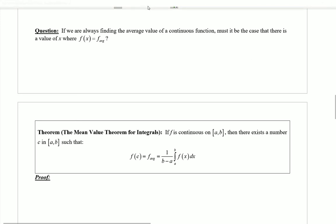So now we're going to turn our attention to a very interesting question. If we are always finding the average value of a continuous function, then must it be the case that there is an x value where if I plug that x into the function, I actually found the y associated with this x, would there always be an x that would make my y equal to the average value?